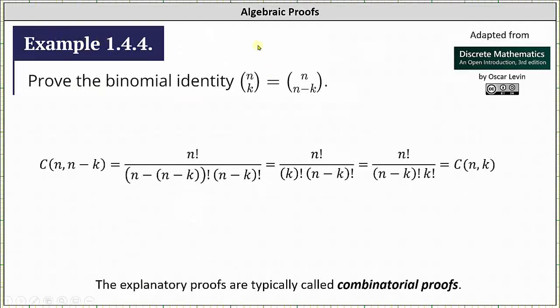In this lesson we'll take a look at one algebraic proof and three possible combinatorial proofs for the binomial identity n choose k equals n choose n minus k.